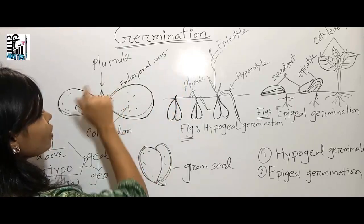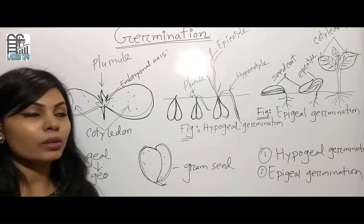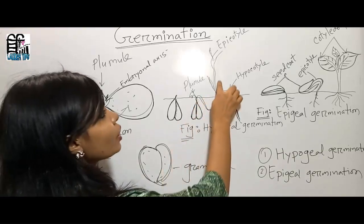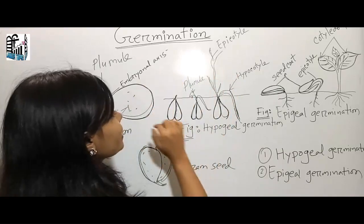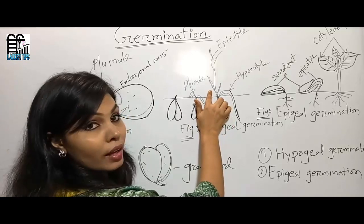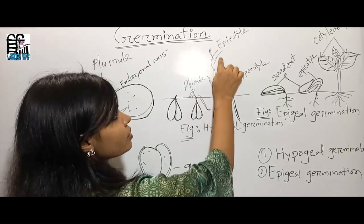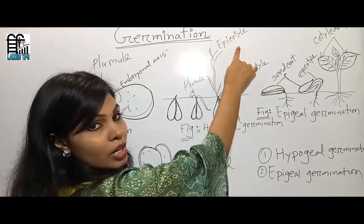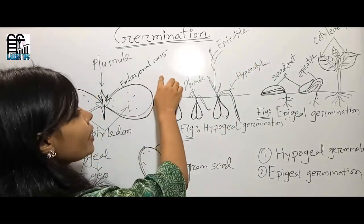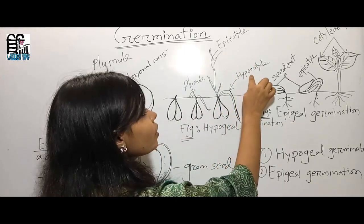The part of the embryonal axis above the nodal zone is called the epicotyl, and the part of the embryonal axis below the nodal zone is called the hypocotyl.